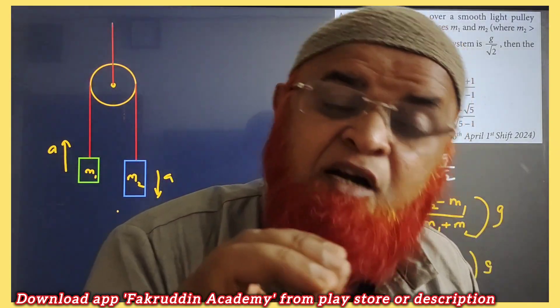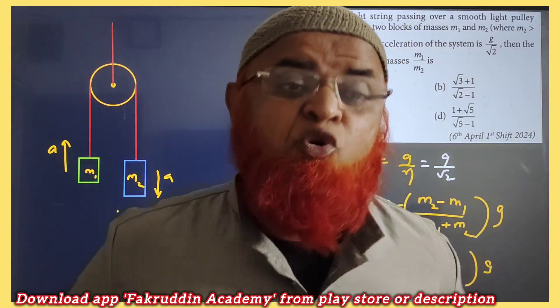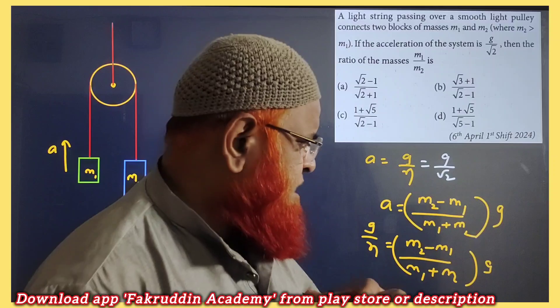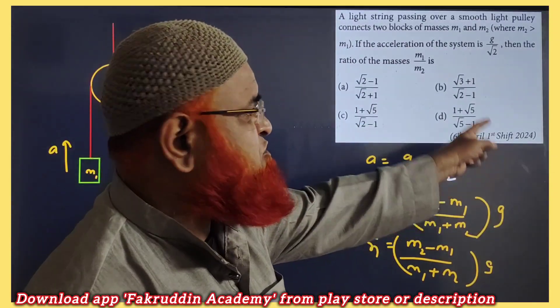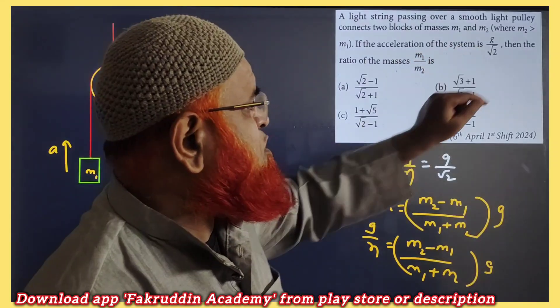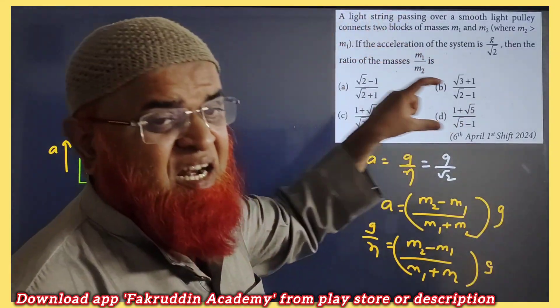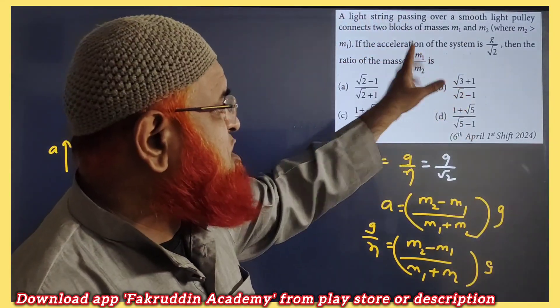I am going to reveal the secret of this short trick, how I am going to create the short trick. Now let us see here. You all know this is a previous year question asked in 2024 JEE Mains. He has given that acceleration is equal to g by root 2. If acceleration is equal to g by root 2, what is the ratio of m1 to m2?